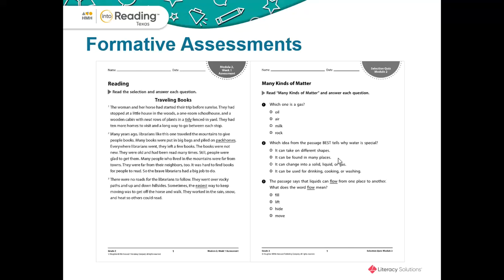Another assessment is the selection quiz, which is meant to be administered after the very first read of the selection in the student's My Book. It simply tests comprehension of the selection. When you administer this selection quiz online, Ed will use the data to provide information on how to group your students, specifically those that need additional support with comprehension. We also have the leveled reader quizzes, which are five multiple-choice questions that test the comprehension of that leveled reader, and again can be assessed online or in print.